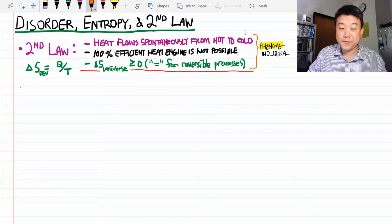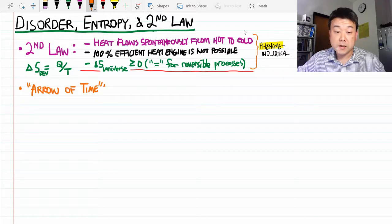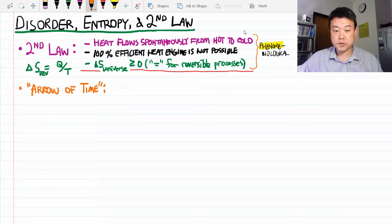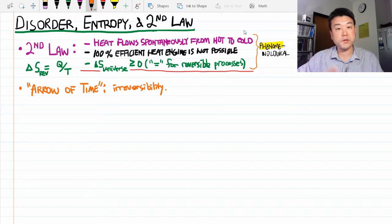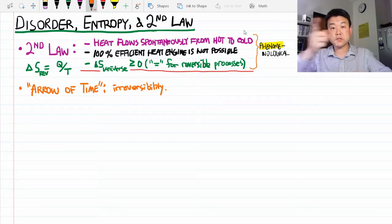Now there's a second feature of the second law that begs for an explanation. Some textbooks refer to it poetically as arrow of time. What it means is the second law is the only law that says something about flow of time. It refers to irreversible processes. If you go back and look at all the other laws of physics that we have covered, including the first law of thermodynamics, you'll find that they are all reversible.